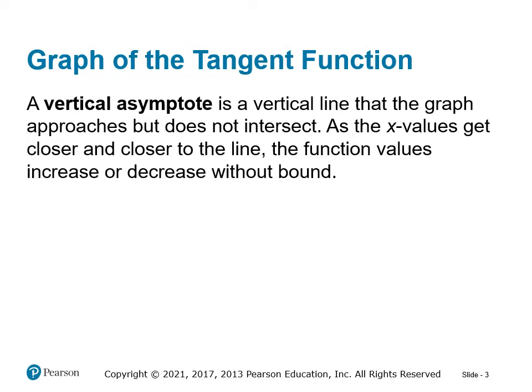Remember that a vertical asymptote is a vertical line that the graph approaches but does not intersect. As the x values get closer and closer to the line, the function values increase or decrease without bound, going towards either positive or negative infinity.